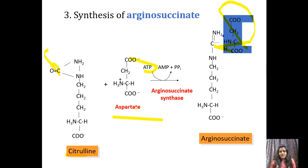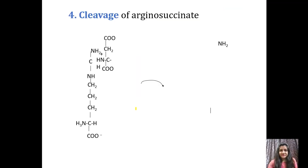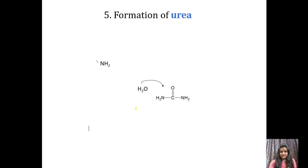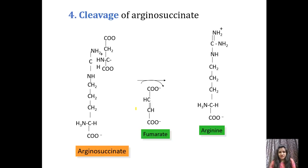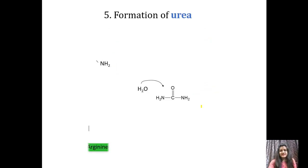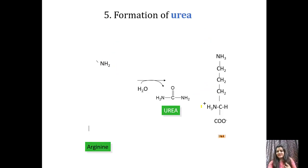The fourth step is cleavage of arginosuccinate. Arginosuccinate is cleaved to give fumarate and arginine. The fumarate portion is removed from the structure, and the remaining structure is arginine. So cleavage of arginosuccinate is also known as the formation of arginine.